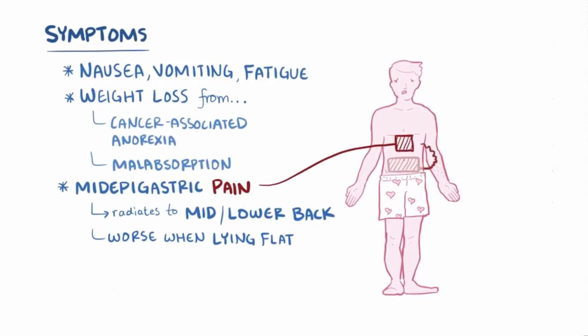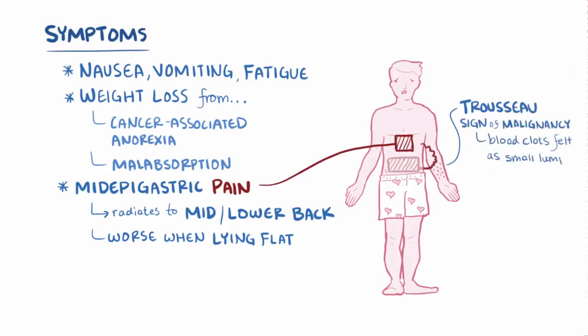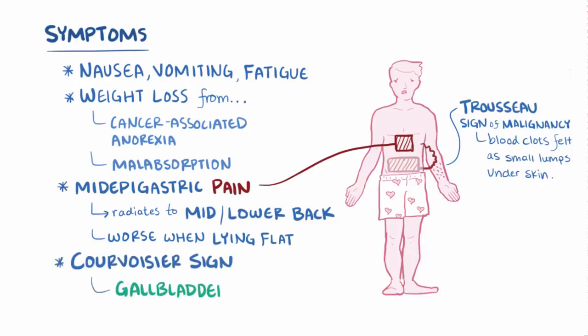Another classic symptom is called the Trousseau sign of malignancy, which is when blood clots — felt as small lumps under the skin — appear unexpectedly in superficial veins and then over time migrate to different locations. There is also Courvoisier's sign, which is when the gallbladder is enlarged and palpable, and the patient doesn't find it tender to the touch, which is unlike gallstones.